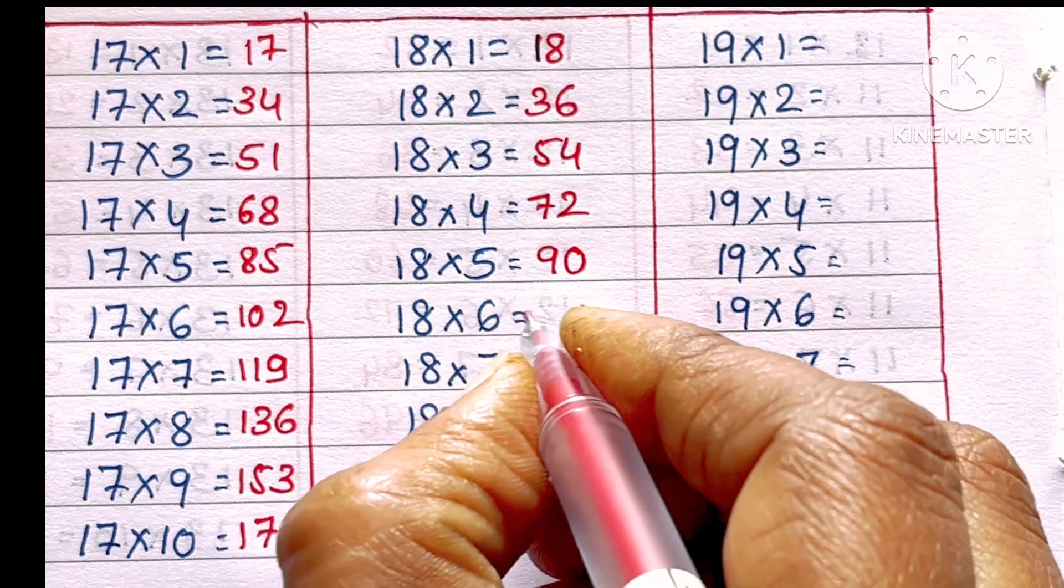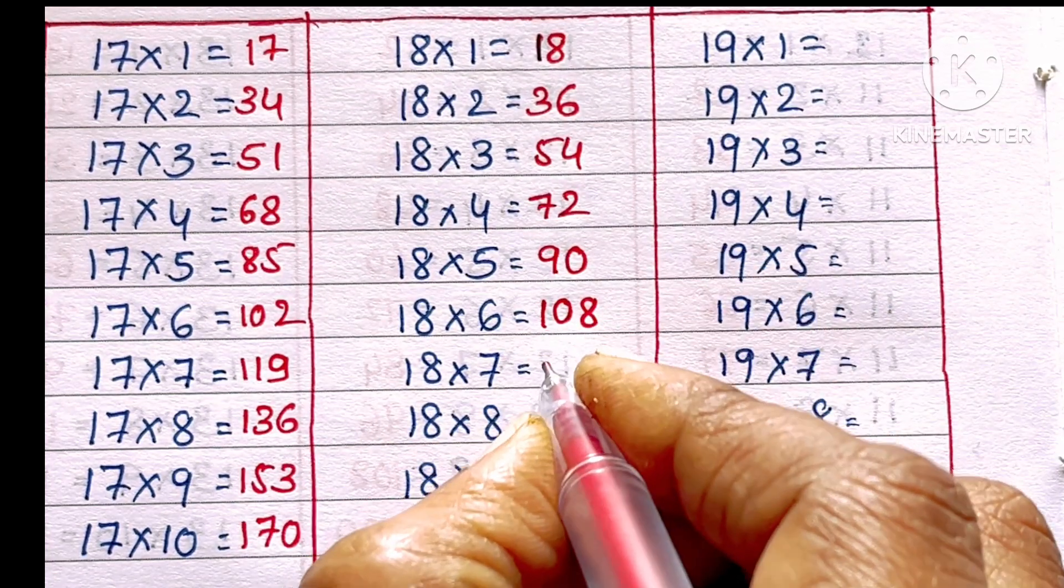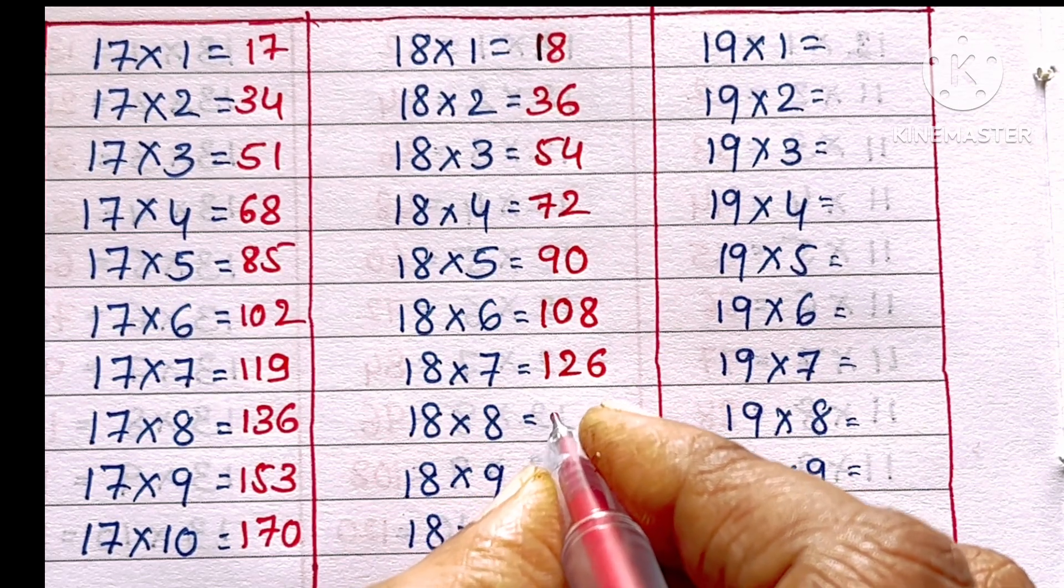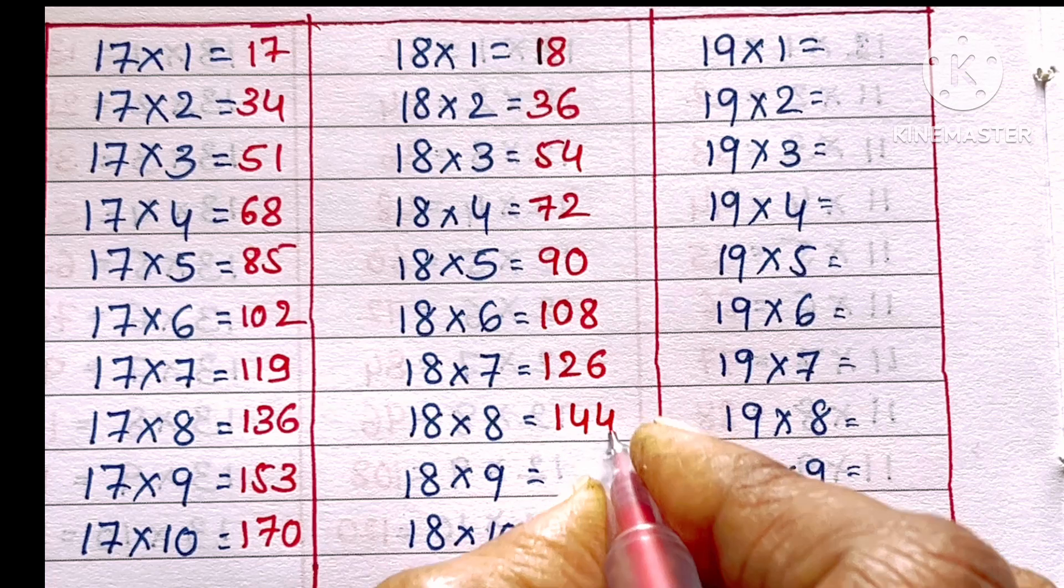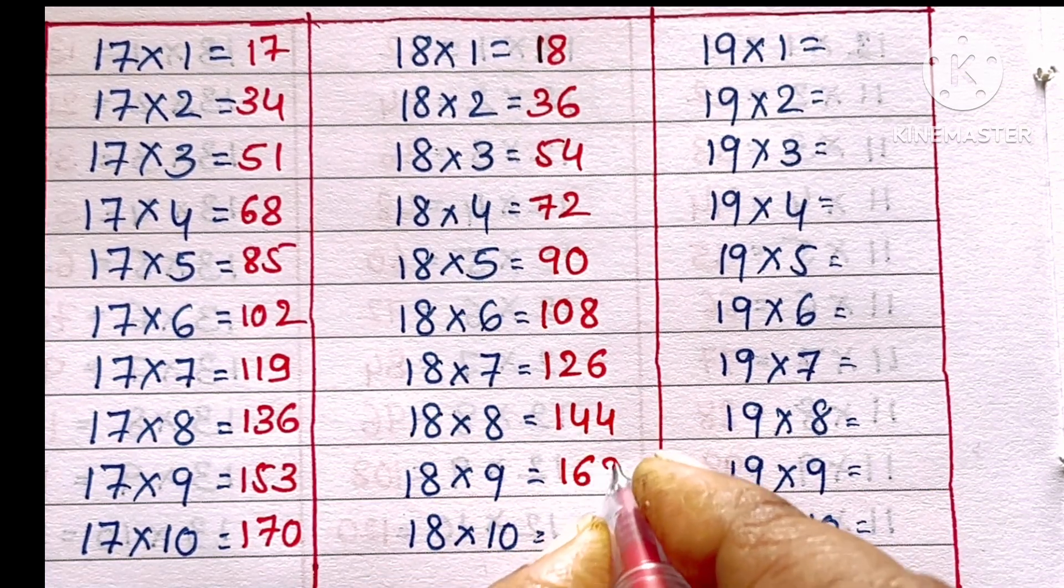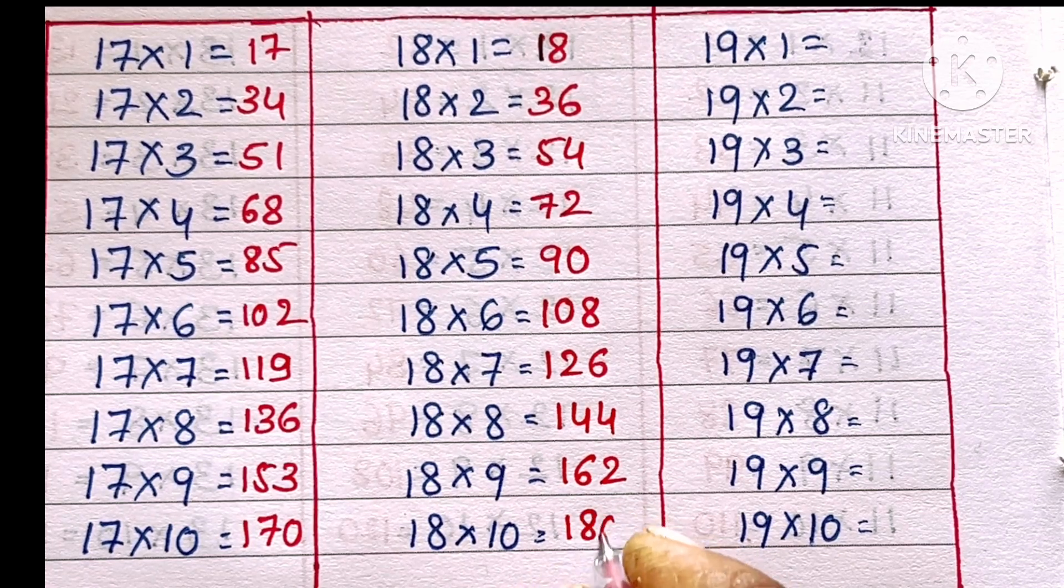18 sixes are 108, 18 sevens are 126, 18 eights are 144, 18 nines are 162, 18 tens are 180.